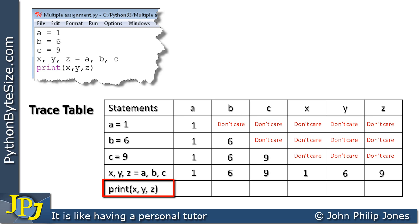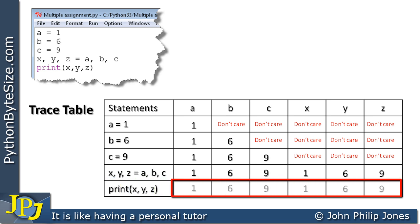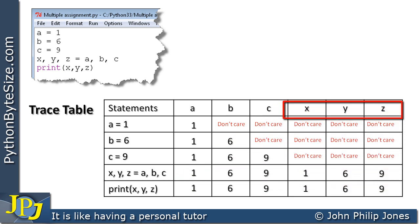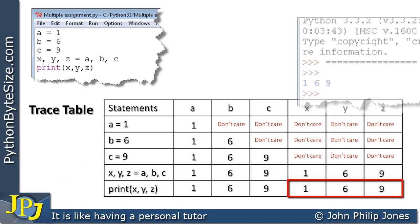What we need to do with the trace table is to show the values of the variables a, b, c, x, y, and z after this particular statement has executed. Well, this particular statement will have no effect on these variables, so they will maintain the value that they had in the previous row as you can see here. Of course what will happen with this particular statement, it will send the values of x, y, and z, which we can see here are 1, 6, and 9, to the console as demonstrated by the runtime here. There you can see you have the 1, 6, and 9.